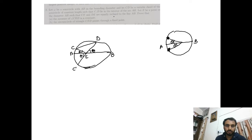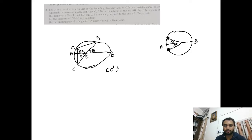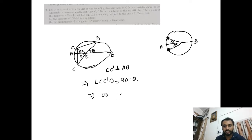If we join C and C', we get that CC' is perpendicular to AB. From there we can say that angle CC'D is 90 minus theta. This implies that chord CD subtends an angle of 180 minus 2 theta at the center.